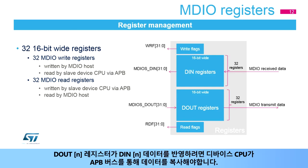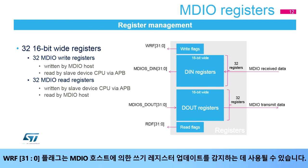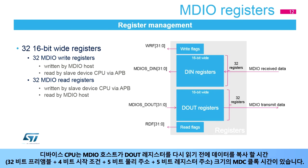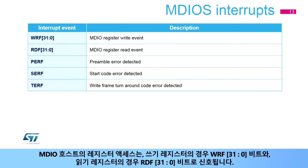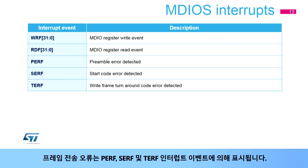For the D-out register to reflect the D-in data, the device CPU has to copy the data via the APB bus. The WRF31-0 flags may be used to detect write register updates by the MDIO host. The device CPU has a time window of 32-bit preamble plus 4-bit start condition plus 5-bit physical address plus 5-bit register address MDC clocks to copy the data before the MDIO host can read the D-out register again. Register accesses by the MDIO host are signaled by bits WRF31-0 for write registers and bits RDF31-0 for read registers. Frame transfer errors are signaled by PERF, SERF, and TERF interrupt events.